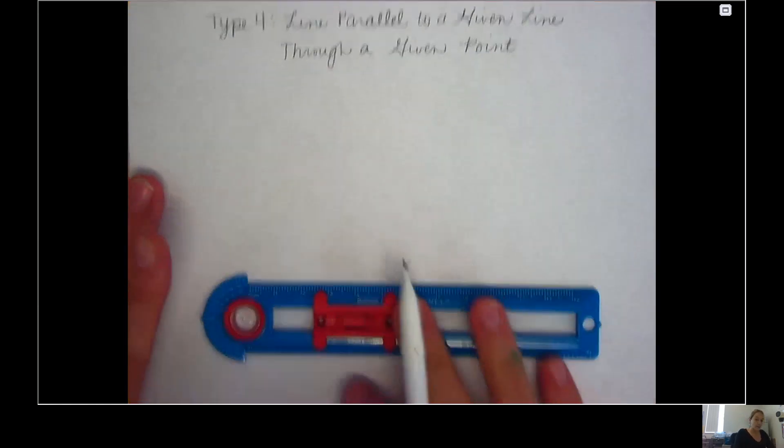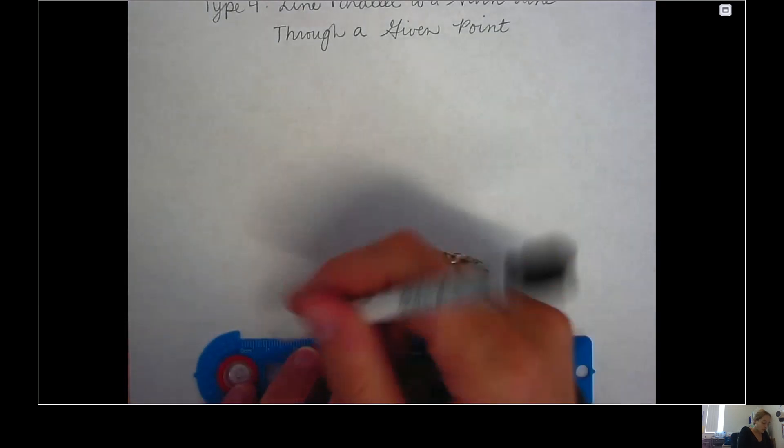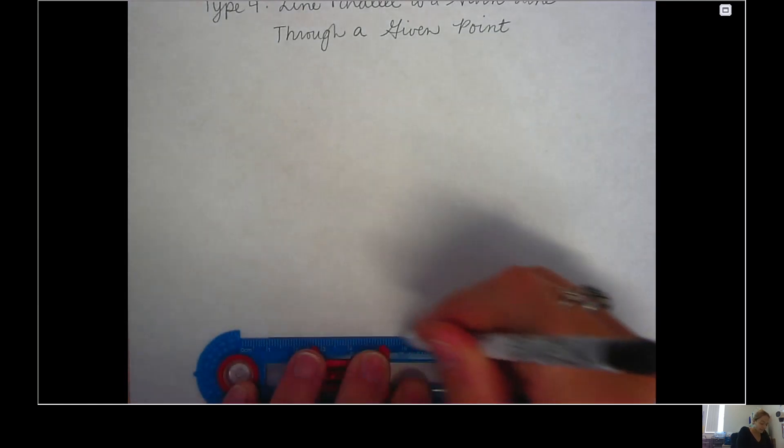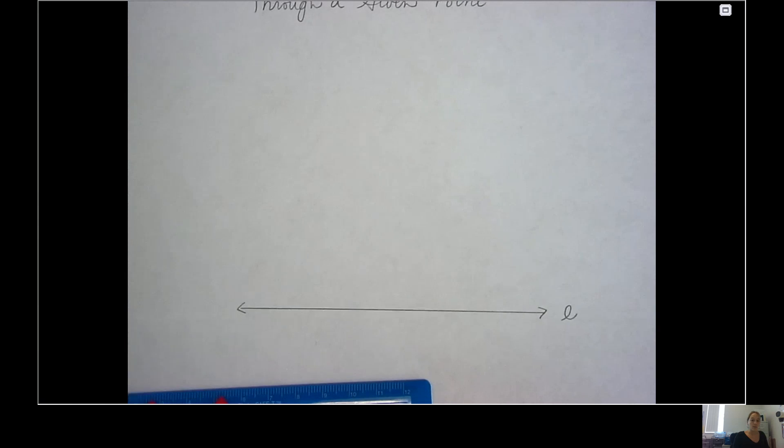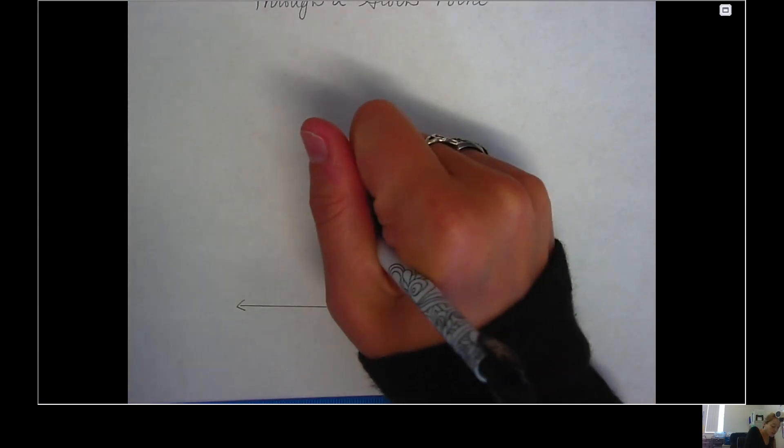I'm going to start by drawing a horizontal line somewhere below. I'm going to draw a pretty large horizontal line and I'm going to name this line, line l. And then I'm going to pick a point somewhere up above it that I want my parallel line to go through, and I'm going to call this point P.